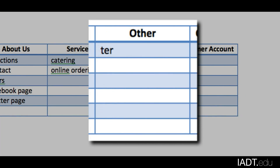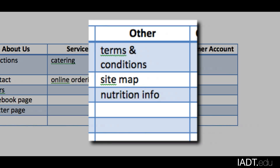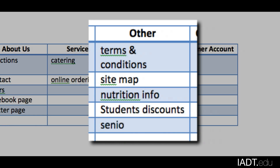In the Other section, I want to make sure I cover some legal aspects, so I'll put Terms and Conditions. I also want to include a Sitemap and Nutrition Info, since a lot of people want to track things like sugar content. I also want to provide some Student Discounts and Senior Discounts.